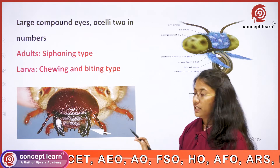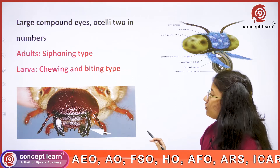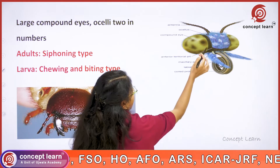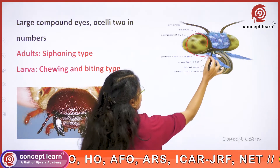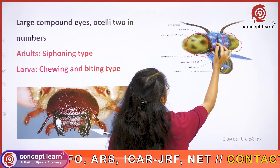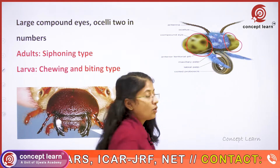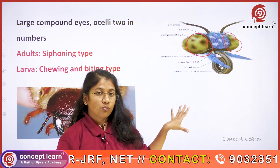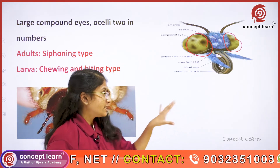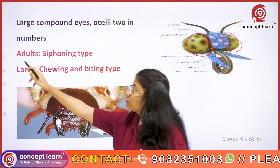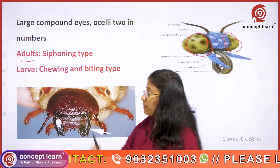Looking at some important features, Lepidoptera have very large compound eyes along with two ocelli. So they possess both compound eyes and ocelli. Now coming to the mouthparts.